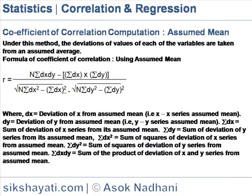Coefficient of correlation computation using the assumed mean method. This method is preferred when it is not possible to get the arithmetic averages of both variables in whole or round numbers. Under this method, the deviations of values of each of the variables are taken from an assumed average.